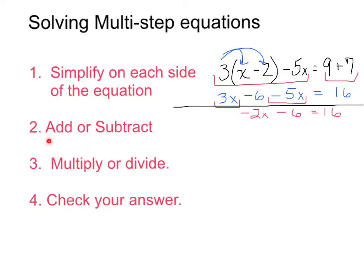So my next step will be then to add or subtract from side to side. So in this case, I'm going to look to get rid of the minus 6. So I'm going to add 6 to both sides. I'm going to be left with negative 2x is going to equal 16 plus 6, which is going to be 22.